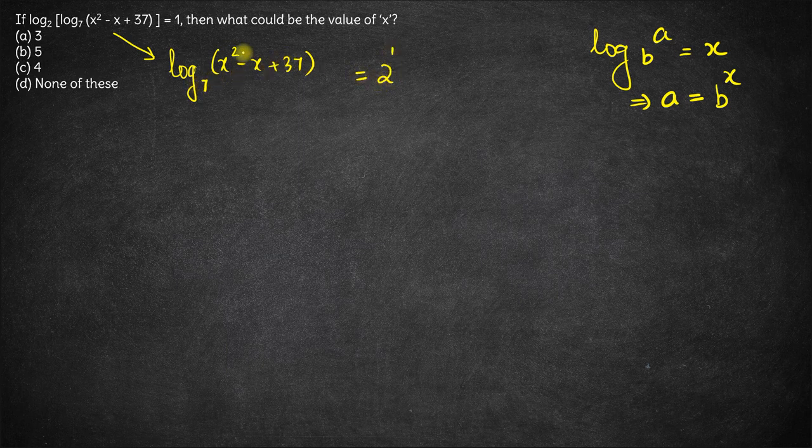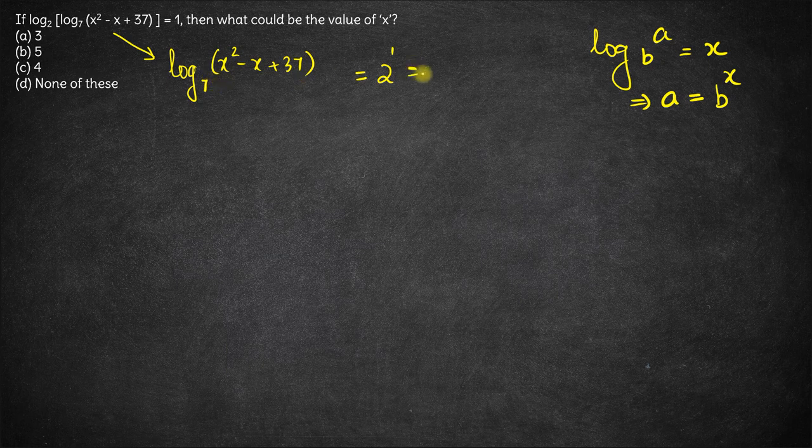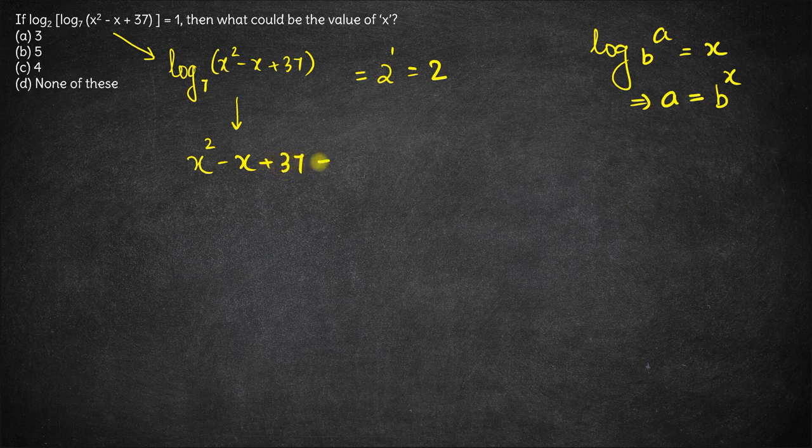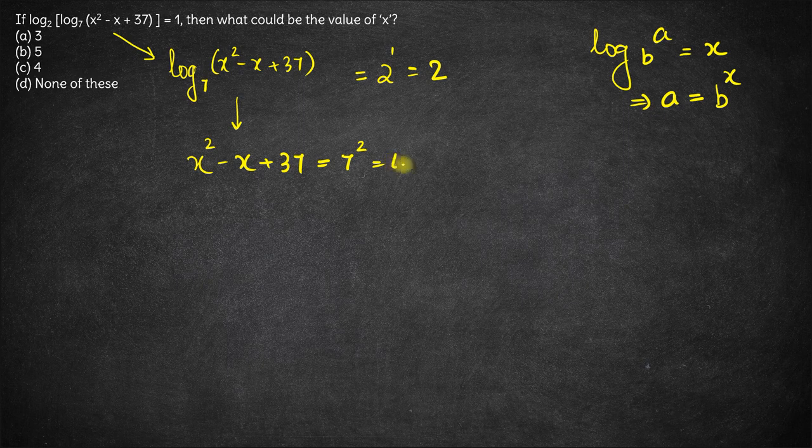Now again, we have log of something base 7 equal to 2. The number, this is the base, and this is the power. We can convert this into exponential equation. We'll have the number x squared minus x plus 37 equal to base 7 to the power 2. 7 squared is 49.